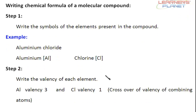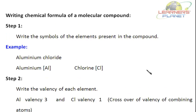The second step is to write the valency of each element. For aluminium, the valency is 3, and chlorine's valency is 1. Valency is the combining capacity of an element. It is also defined as the number of electrons an atom of an element loses, gains, or shares while forming a compound.